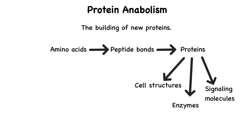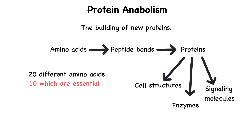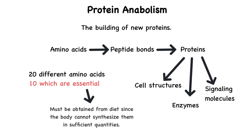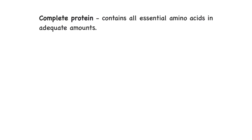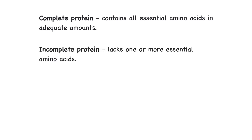Your body relies on 20 different amino acids to build proteins, but 10 of these are considered essential, meaning they must be obtained from the diet because the body cannot synthesize them in sufficient quantities. A complete protein, found in foods like meat, dairy, and soy, contains all essential amino acids in adequate amounts. In contrast, an incomplete protein, typically from plant sources like grains and legumes, lacks one or more essential amino acids. To meet your body's needs, incomplete proteins can be combined to form a complete protein profile, such as pairing rice and beans or peanut butter with whole wheat bread.